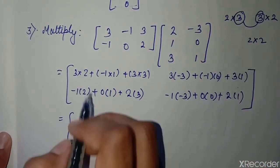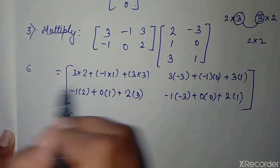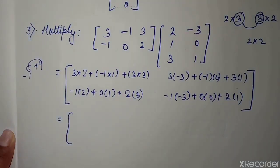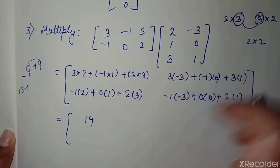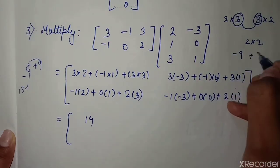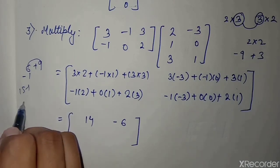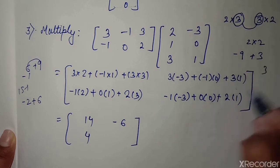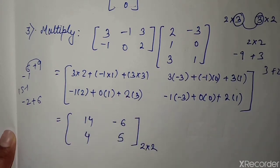Now computing: 3 into 2 is 6, then minus 1 plus 9 gives 14. Then 3 into minus 3 is minus 9, plus 3 gives minus 6. Then minus 2 plus 6 gives 4. And 3 plus 2 gives 5. So the resulting 2 into 2 matrix is [14, -6; 4, 5]. We have successfully multiplied these two matrices.